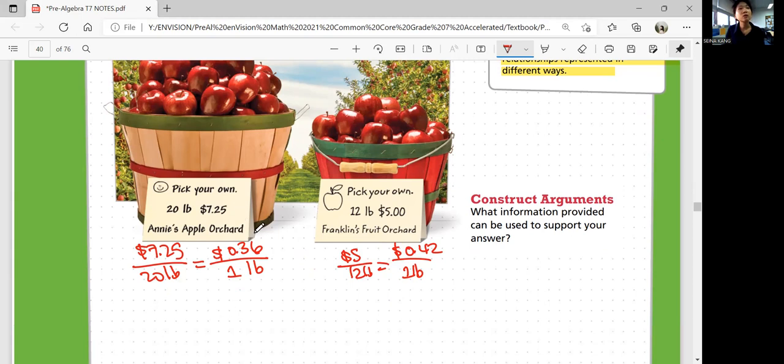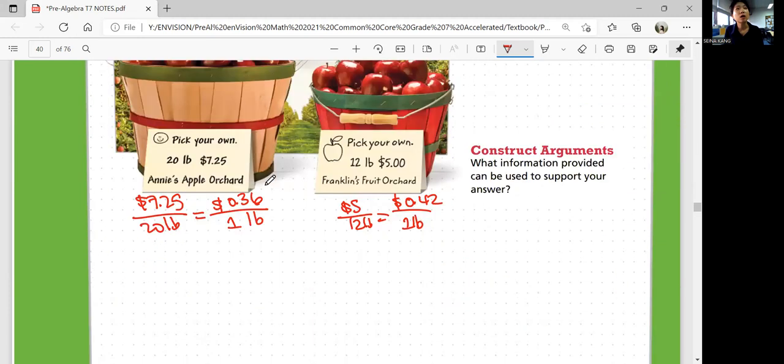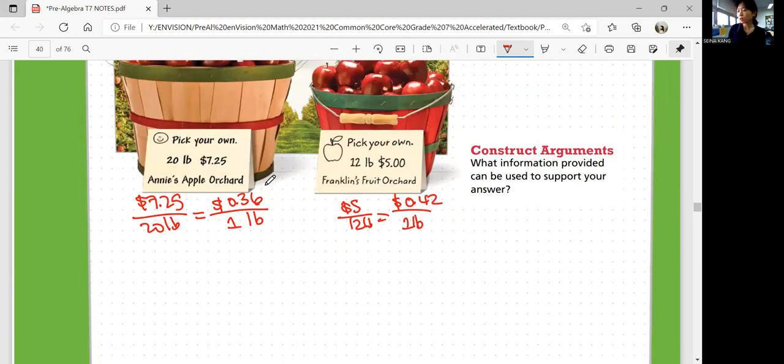the better choice would be Annie's if she picks a lot more apples than just 12 pounds. But if she's just gonna pick an apple less than 20 pounds, then it saves her money to go to Franklin's.